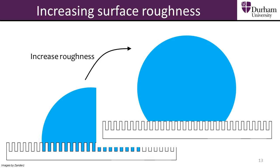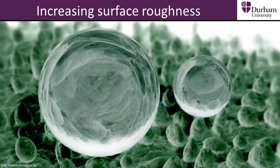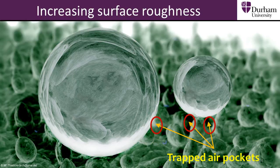At this point, water droplets can no longer spread out into the cracks of the surface, instead sitting on top of trapped air pockets in the new solid-air composite surface. One of the most well-known examples of a superhydrophobic surface is the lotus leaf. Looking at this computer-generated representation, we can see the pockets of air upon which the water droplets lie.